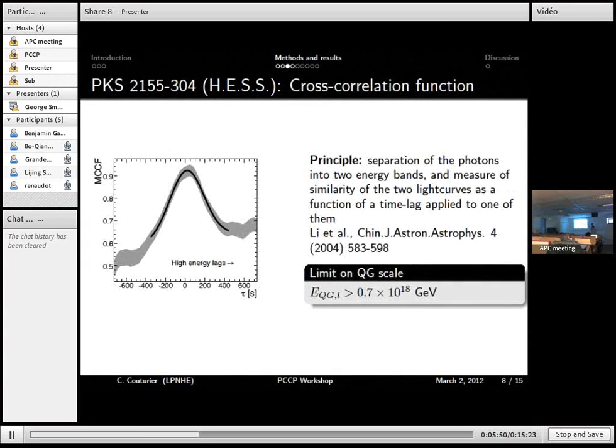Another method is cross correlation function. Again, we separate the photons into two energy bands. And we try to find the lag that will make both peaks meet. And again, we can derive limits with this method.